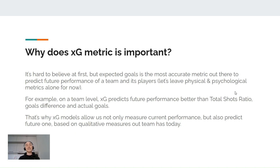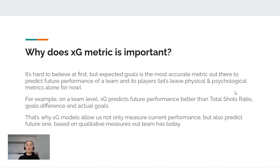Why is the expected goals metric important? It's hard to believe at first, but expected goals is the most accurate metric out there to predict future performance of a team and its players. On a team level, expected goals predicts future performance better than total shots ratio, goals difference, and actual goals scored by a team. That's why expected goals models allow us to not only measure the current performance of a team and players, but also predict the future one based on qualitative measures a team has today.